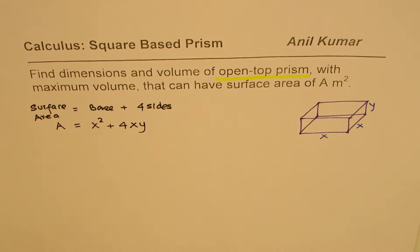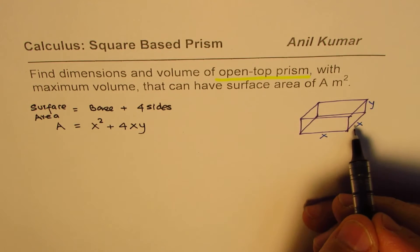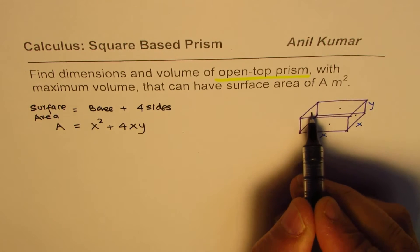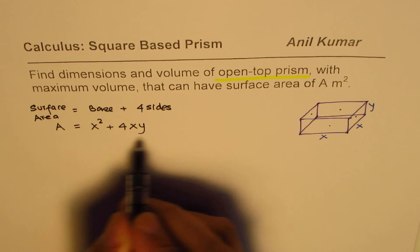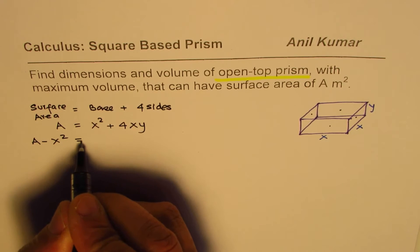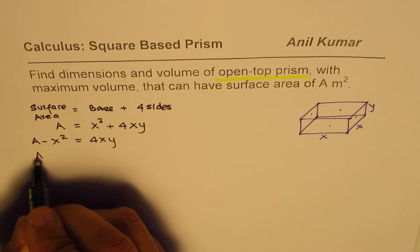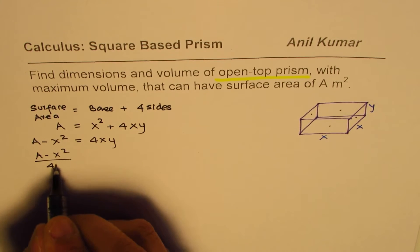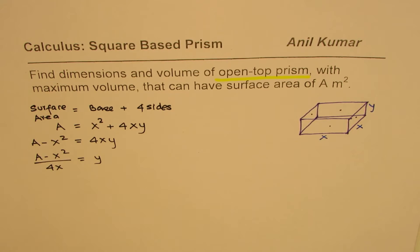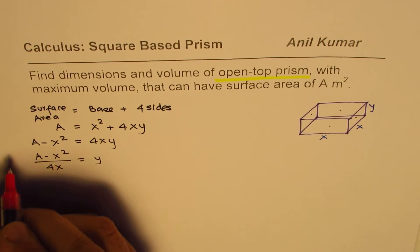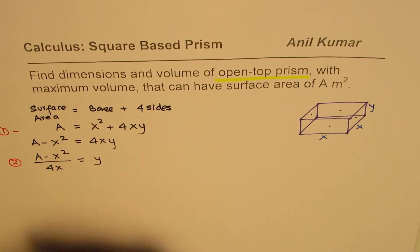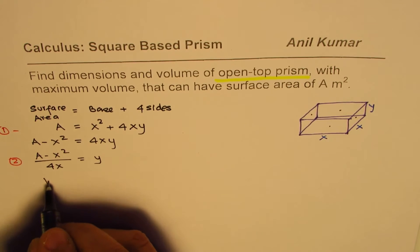We are considering five faces: one, two, three, four, and the base. We can rearrange this formula to find Y in terms of X. Rearranging: A − X² = 4XY, so Y = (A − X²) / (4X). Let's call this equation 2 — it relates the two variables X and Y.